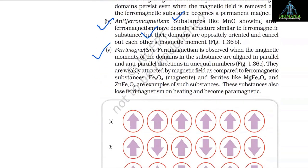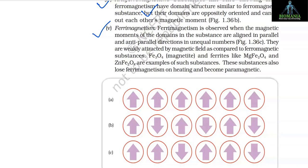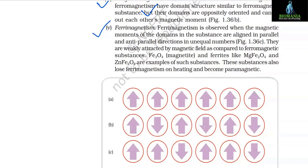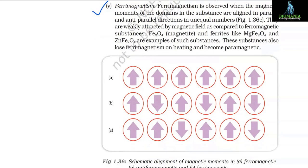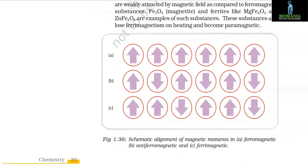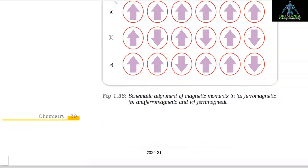(4) Antiferromagnetism — substances like MnO have domain structures similar to ferromagnetic substances, but domains are oppositely oriented and cancel each other's magnetic moments. (5) Ferrimagnetism — observed when magnetic moments of domains are aligned in parallel and antiparallel directions in unequal numbers. They are weakly attracted by magnetic fields compared to ferromagnetic substances. Fe₃O₄ (magnetite) and ferrites like MgFe₂O₄ and ZnFe₂O₄ are examples. These substances lose ferrimagnetism on heating and become paramagnetic.